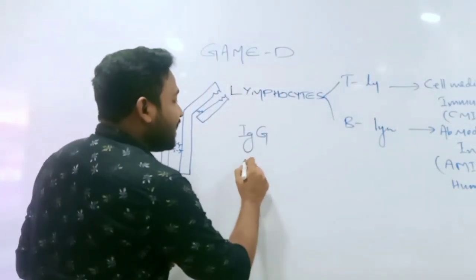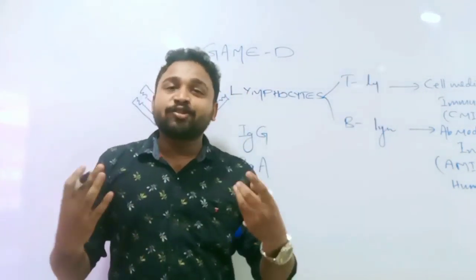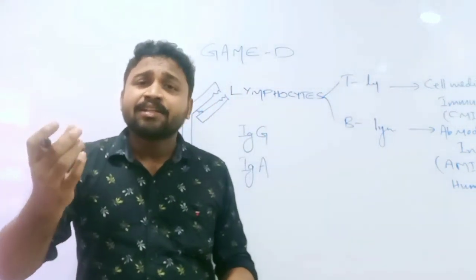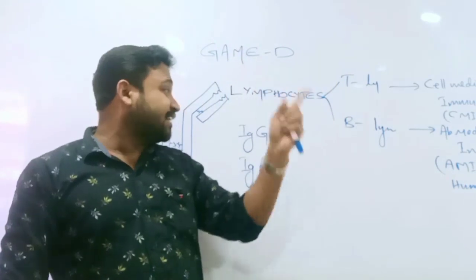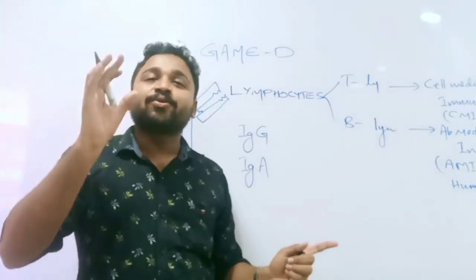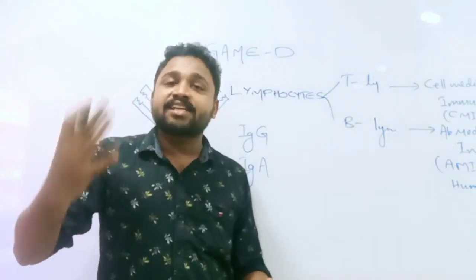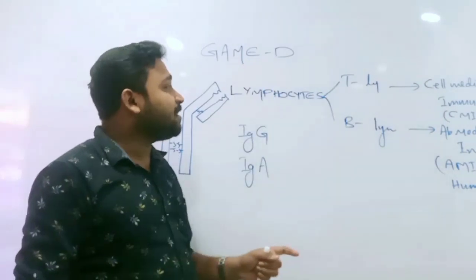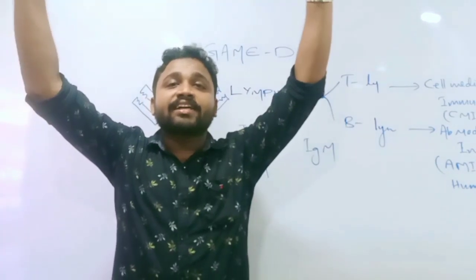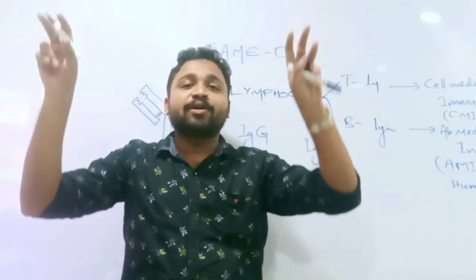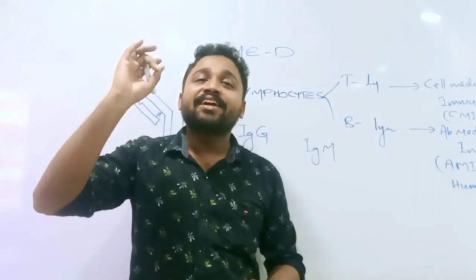Next is IgA. IgA is found in colostrum. IgA has changed molecular weight. IgA is associated with mucosal immunity and is found in colostrum — it helps protect newborns. IgA is sometimes called the Millionaire Molecule.